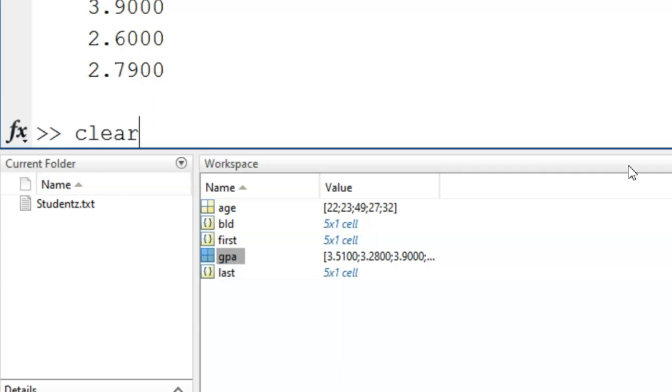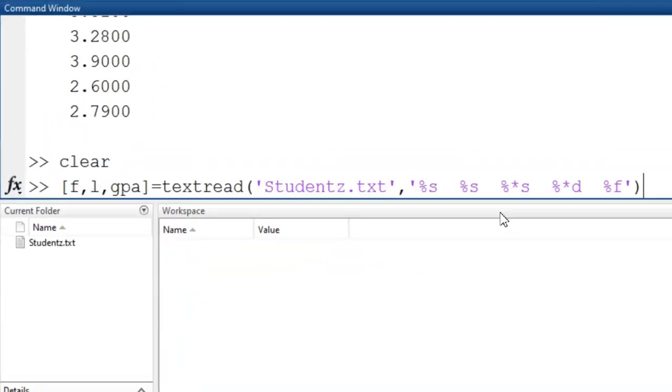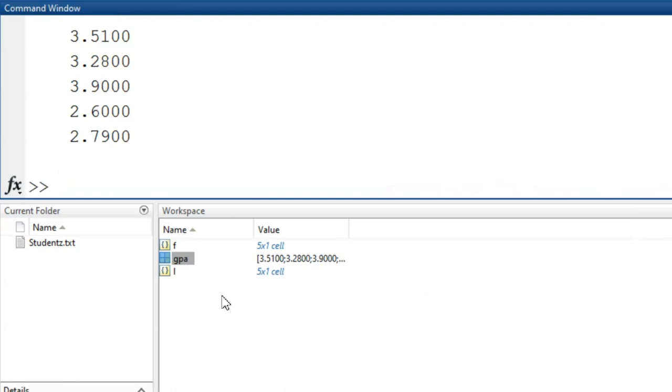Finally, I can also extract only specific columns of data. Using the command shown here, I will ignore the student's blood type and age. How? By placing asterisks within the data type listing of those two columns. Correspondingly, I need to reduce the output argument list to hold just three variable names. Now, when the command is entered, only those three columns are imported.